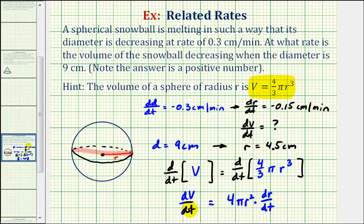Now to find dV/dt, we're going to substitute 4.5 for r, and negative 0.15 for dr/dt.